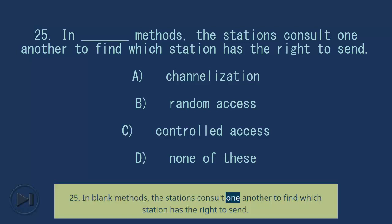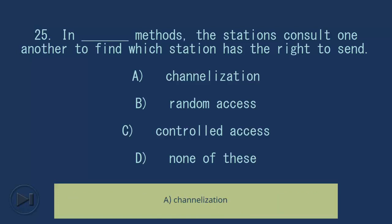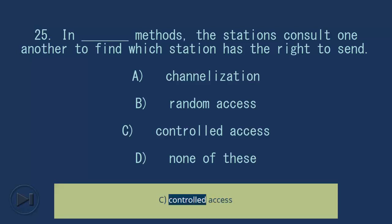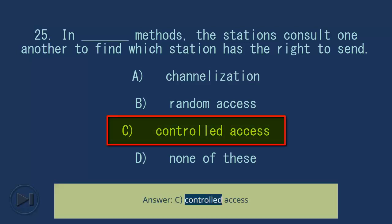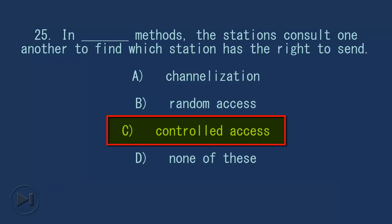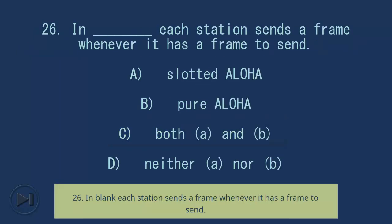Question 25: In blank methods, the stations consult one another to find which station has the right to send. A) Channelization, B) Random Access, C) Controlled Access, D) None of these. Answer: C) Controlled Access.